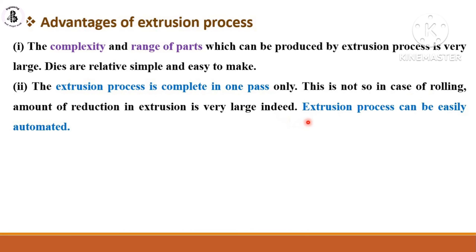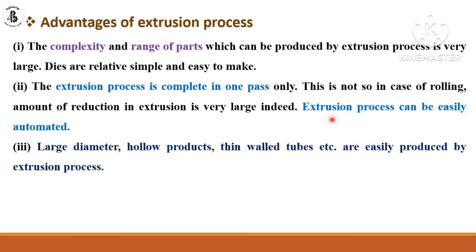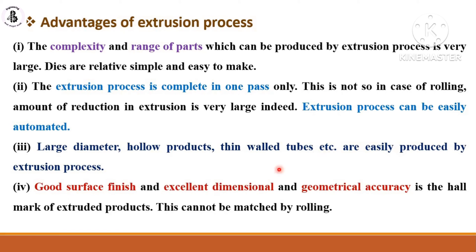Extrusion can be easily automated. Large-diameter hollow products, thin-wall tubes, and similar items are easily produced by extrusion without any joints. Good surface finish and excellent dimensional and geometrical accuracy are hallmarks of extruded products, which cannot be matched by the rolling process.